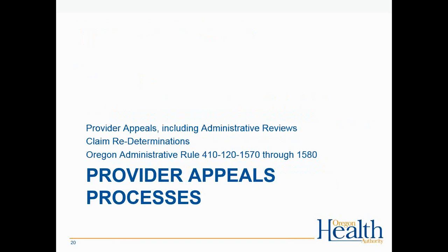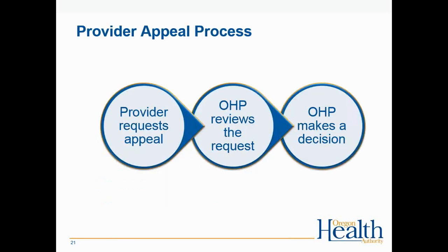The provider appeals process — found in OAR 410-120-1570 through 1580 — follows a simple diagram: step 1, the provider requests an appeal; step 2, OHP reviews the request and determines whether this is a claim redetermination or an administrative review — the provider does not need to decide this, just submit the appeal; step 3, OHP makes a decision on the appeal.